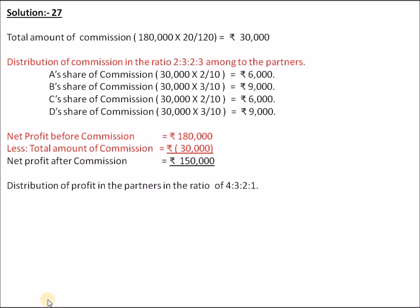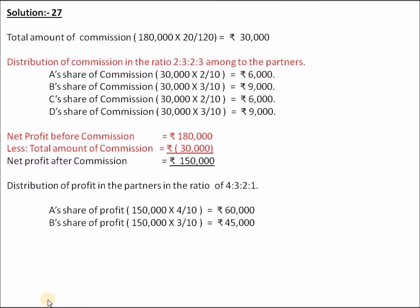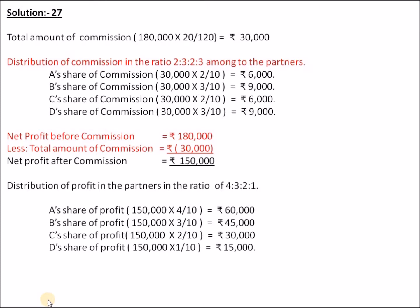Now we distribute the net profit of Rs. 1,50,000 among partners in trading ratio 4:3:2:1. A's share: Rs. 1,50,000 × 4/10 = Rs. 60,000. B's share: Rs. 1,50,000 × 3/10 = Rs. 45,000. C's share: Rs. 1,50,000 × 2/10 = Rs. 30,000. D's share: Rs. 1,50,000 × 1/10 = Rs. 15,000.